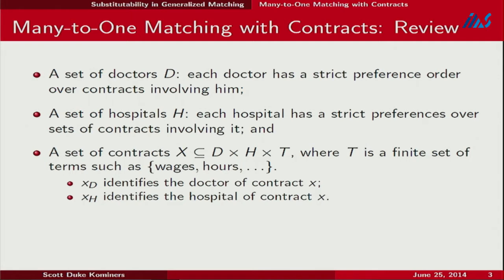You can embody this through preferences or by constraining the contract set — it's the same idea. Our contract set is an abstract object that names for each contract a doctor and a hospital. These are bilateral agreements between doctors and hospitals that contain some other data. If you forget about T, you get standard doctor-hospital matching. If T is wages, you get something like Kelso-Crawford. We can handle any finite parameter space.